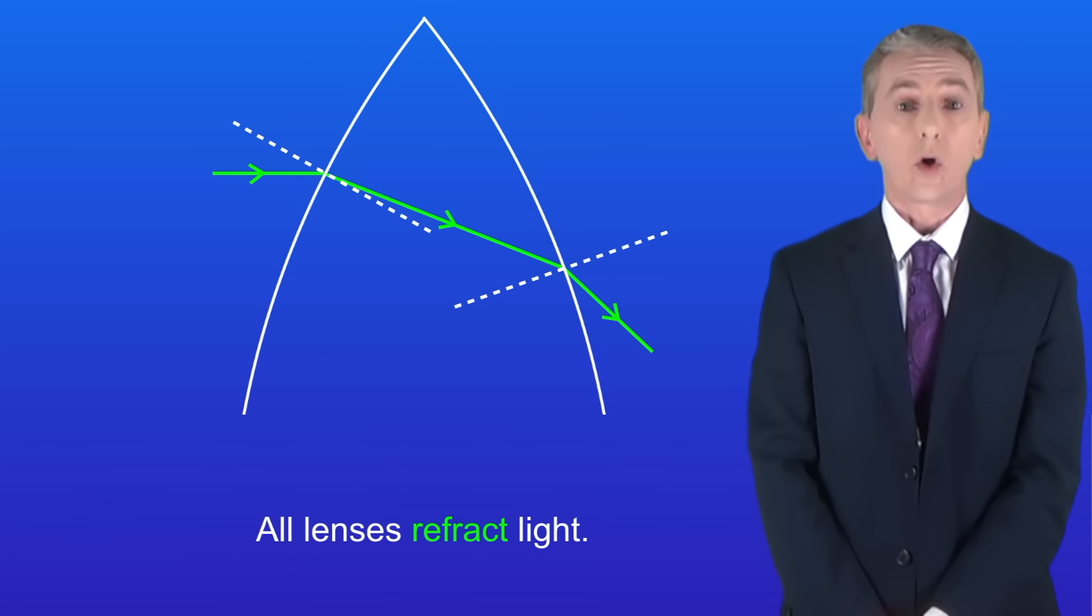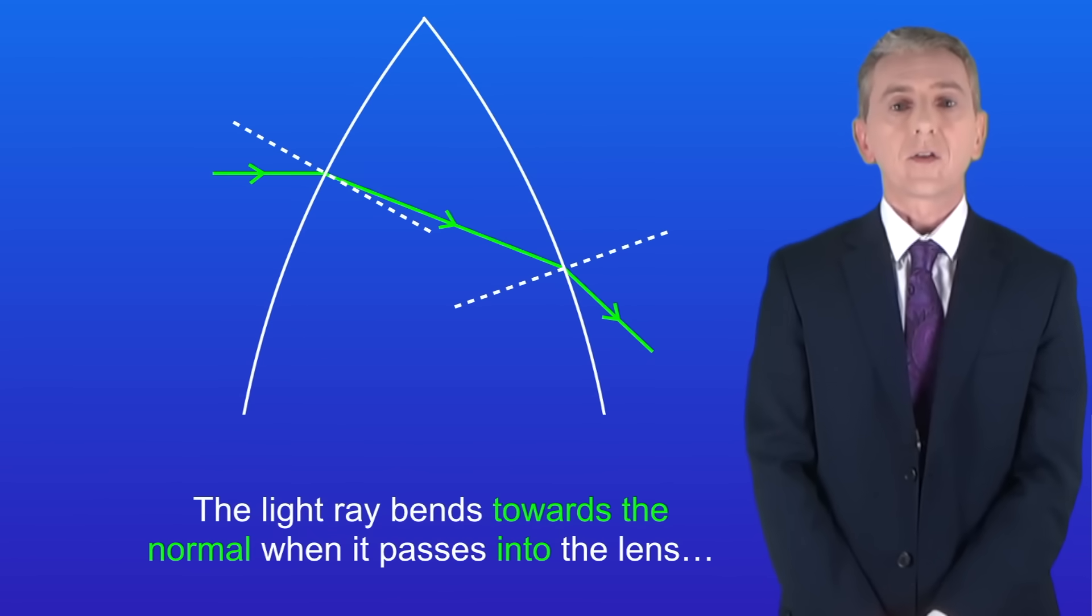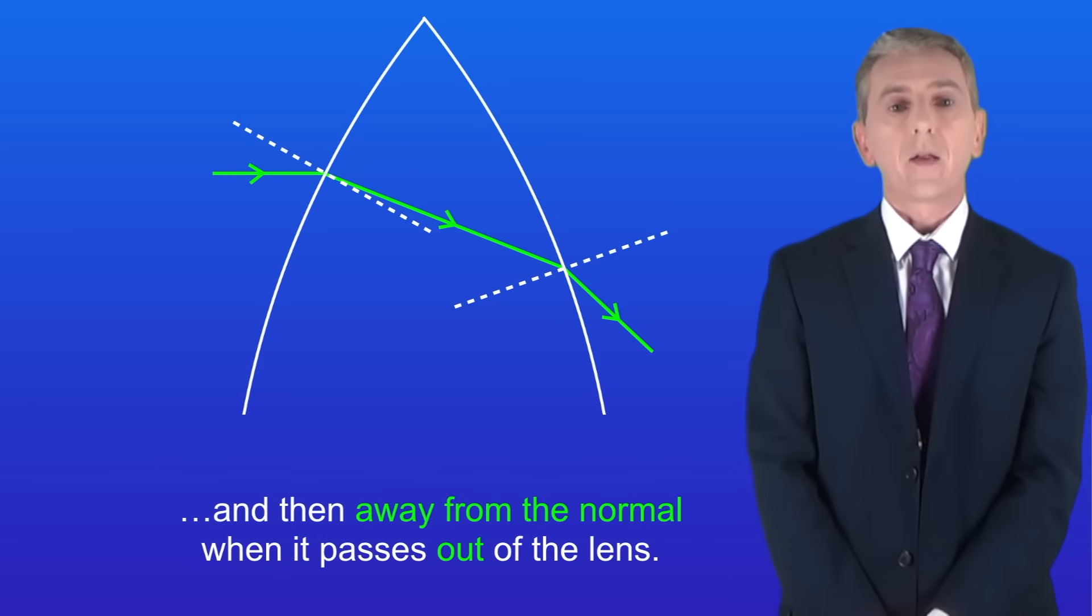Now the key feature of all lenses is that they refract light. As you can see the light ray bends towards the normal when it passes into the lens and then away from the normal when it passes out of the lens.